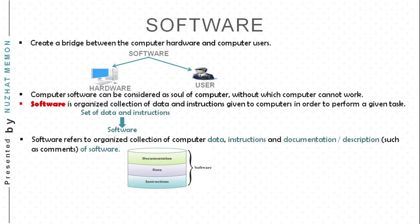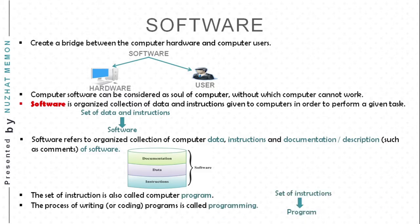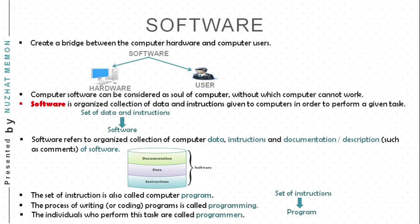Software is an organized collection of computer data, instructions, and documentation or description such as comments of software. The set of instructions is called a computer program. The process of writing or coding programs is called programming, and the individuals who perform this task are called programmers.